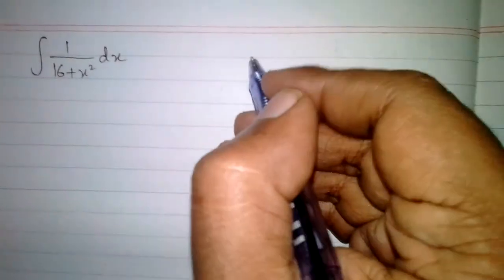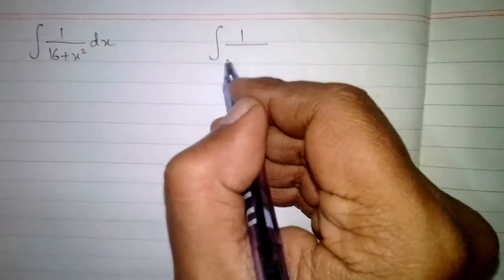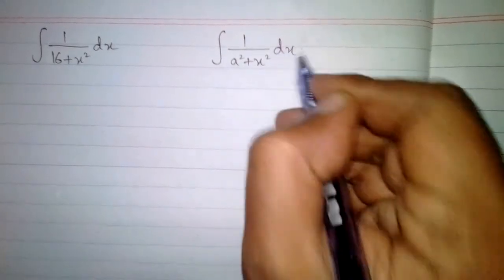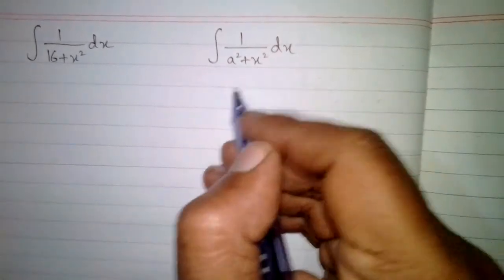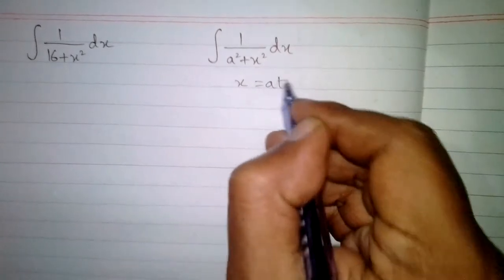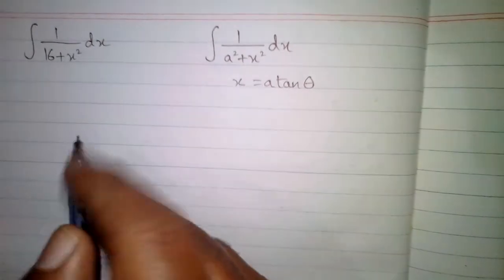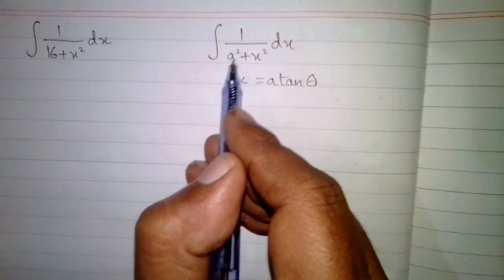In this video we are going to integrate 1 upon 16 plus x square with respect to x. In order to integrate this function, we will look at the integral of 1 upon a square plus x square. We will use the substitution x is equal to a tan theta, where a is the square root of a square. In this integral we can see that we have 16 in place of a square.